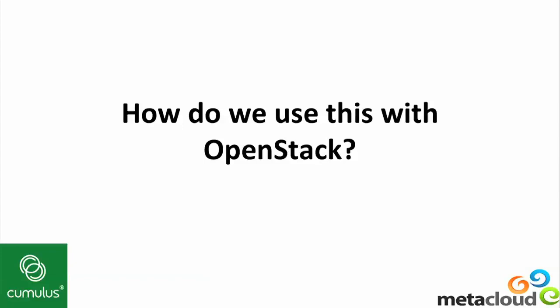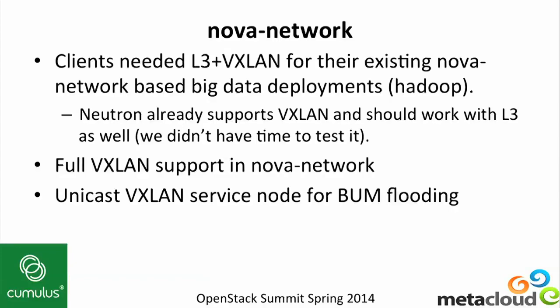So how do we use this with OpenStack? It mostly actually just works with Neutron. We had a bunch of clients that were using Nova Network already in existing cloud deployments — we've been deploying clients for about three years now, starting before there was a Neutron. A couple of them are now starting to do big data with Hadoop workloads, and the limitations of the L2 stuff were starting to cause problems for them. So we spent effort to make this layer 3 plus VXLAN topology work for them. We've added full VXLAN support to Nova Network.